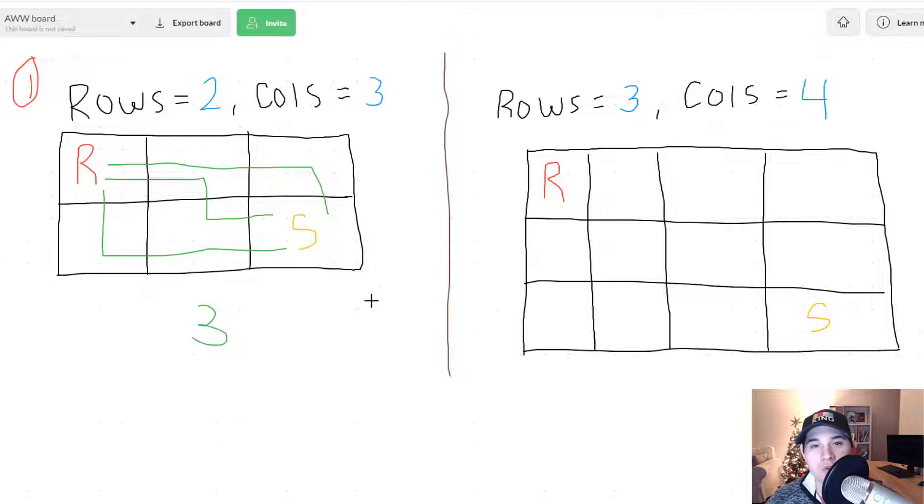But we need to use dynamic programming in order to determine this three value by the time we reach the bottom right of our corner. So let's break this down because all dynamic programming is is you're building calculations off of previous calculations.